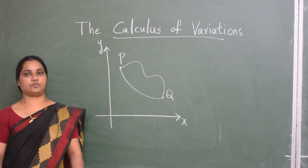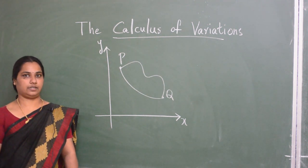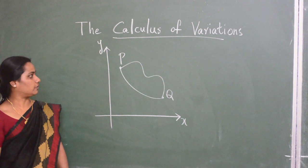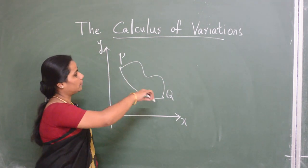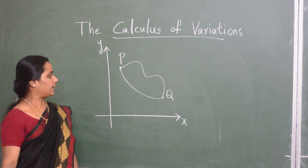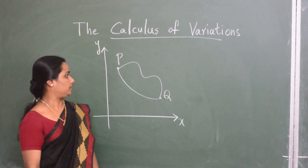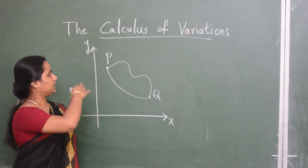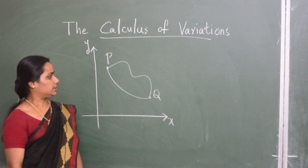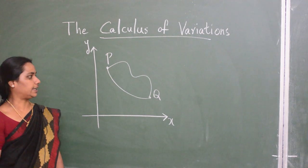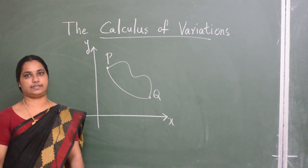So it is the problem of quickest descent. Here we consider the problem of a bead sliding down from a point P to the point Q and we have to find the curve through which this bead reaches Q from P. This problem was posed by Johan Bernoulli in the year 1696.